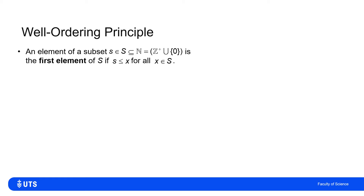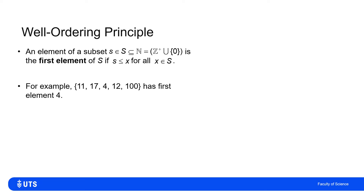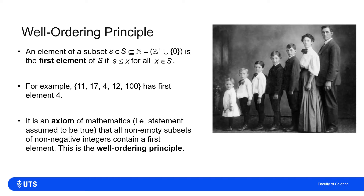Any time we have a set S which contains only natural numbers, we say that an element s from that set is the first element if s is less than or equal to x for all x in the set. So if I have a set with elements 11, 17, 4, 12, and 100, then I would say that the first element of that set is 4, because 4 is less than or equal to every other member of that set.